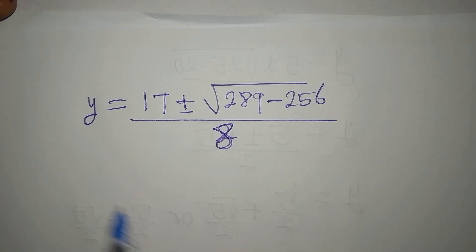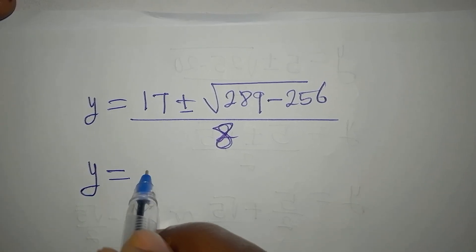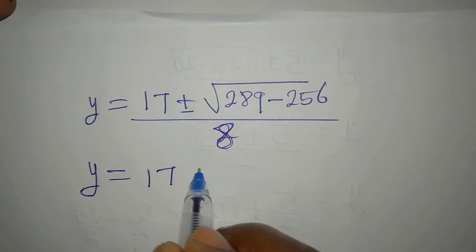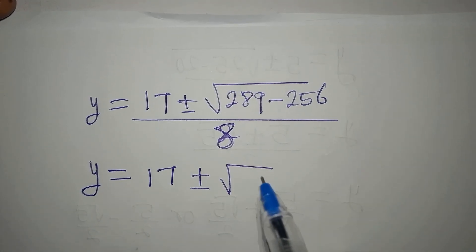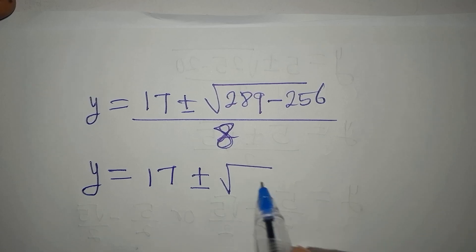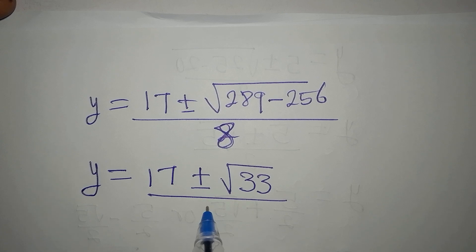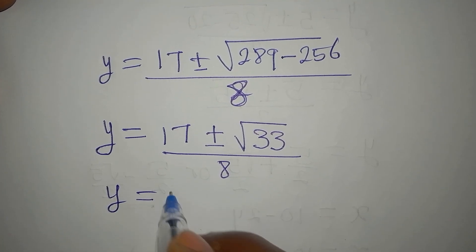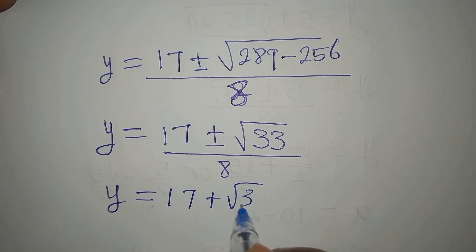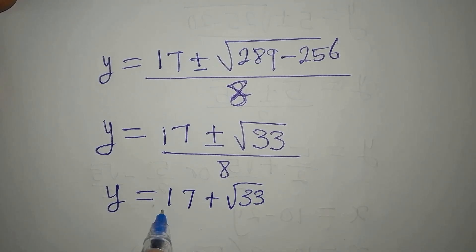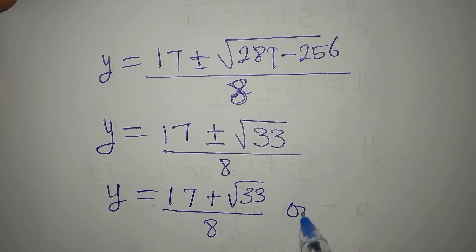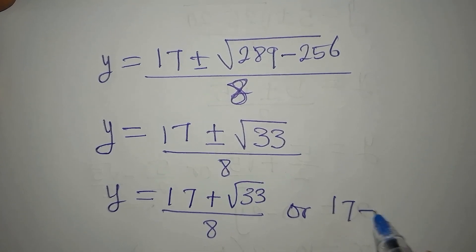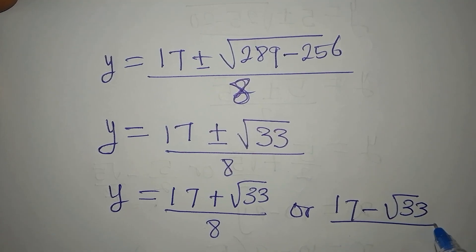So y now will be equal to 17 plus or minus, 289 minus 256 will give us 33, then we divide by 8. So from here now we have y to be equal to 17 plus square root of 33 over 8, or 17 minus square root of 33 over 8.